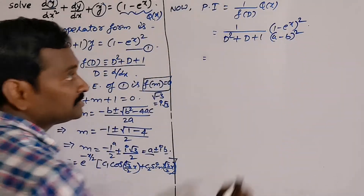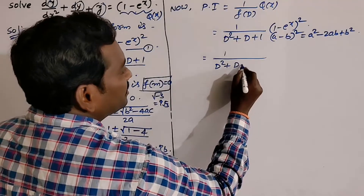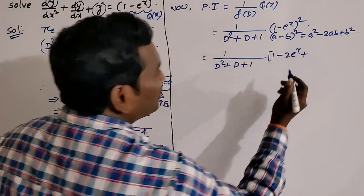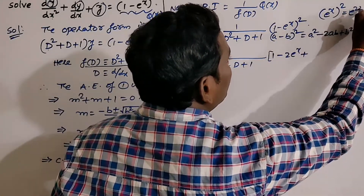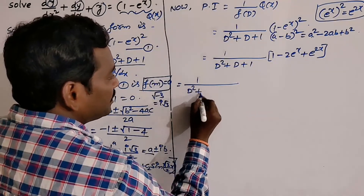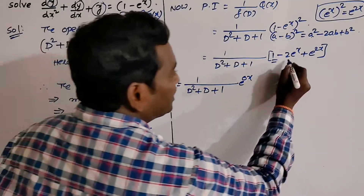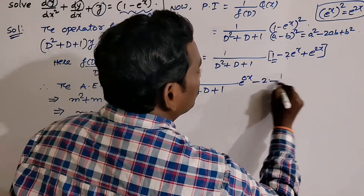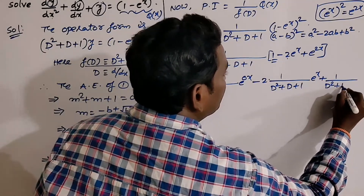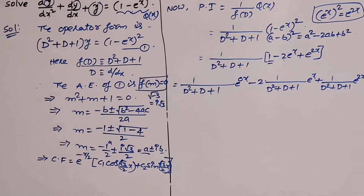Expanding: 1/(D² + D + 1) · (1 − 2eˣ + e²ˣ). Separate the parts: 1/(D² + D + 1) · 1, minus 2 times 1/(D² + D + 1) · eˣ, plus 1/(D² + D + 1) · e²ˣ. For the constant term, express 1 as e^(0·x). Now all parts are in the form 1/f(D) · eᵃˣ.